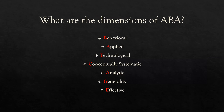Those are the seven dimensions. They're straightforward, but exam questions can be tricky because they all blend together. People often confuse applied and analytic, or effective and applied. Behavioral, technological, systematic, and generality are fairly straightforward. It's really applied, analytic, and effective that require a little more studying. First things first, you have to know all seven — so find a way to remember them. Once again: Behavioral, Applied, Technological, Conceptually Systematic, Analytic, Generality, and Effective.